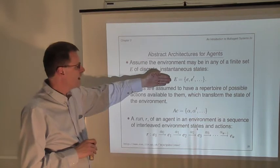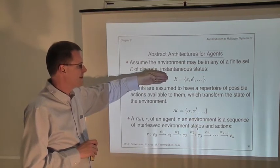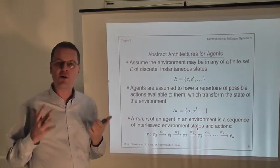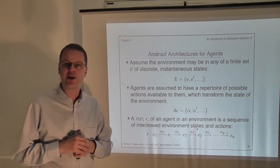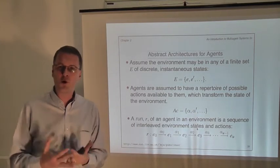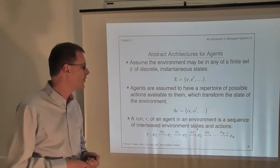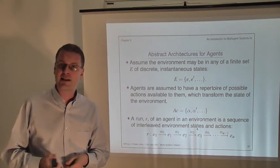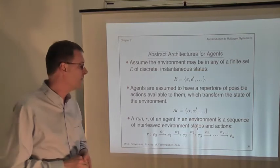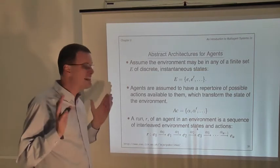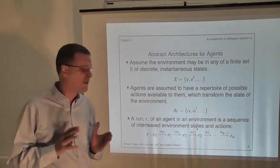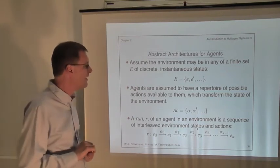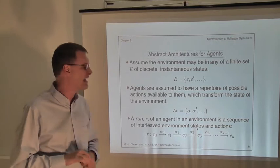The first thing we want to do is model environment states. We're going to have a set, big E, which is going to be the set of all possible configurations of the environment. If the environment was a computer program, then it's all possible configurations of the program's memory. If it's a game of chess, then these are all possible configurations — all possible situations that could arise within a game of chess. We're going to keep it at that level of abstraction and assume we've got this set of environment states, big E.